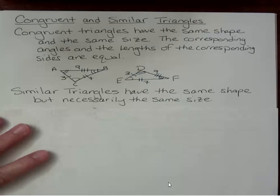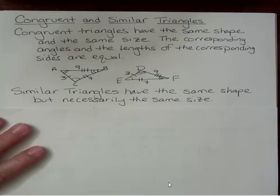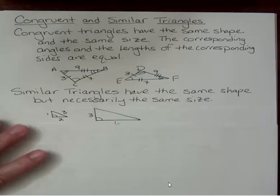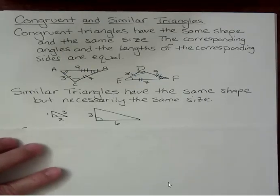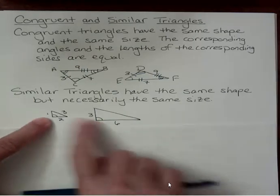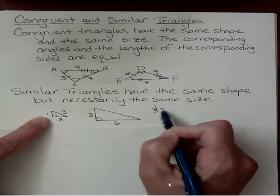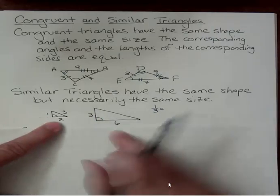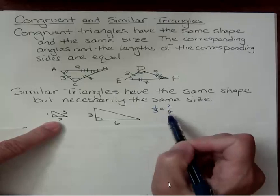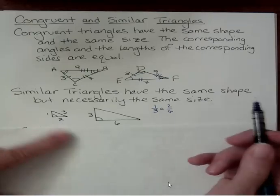Now similar triangles have the same shape but not necessarily the same size. So for instance here's a picture of two triangles that are similar. They're similar because when you compare the sides they have the same relationship. So let's look at these two sides here. We can say that one is to three the same way that two is to six. Is that true? Well one-third and two-sixths, two-sixths is one-third. That's true right?